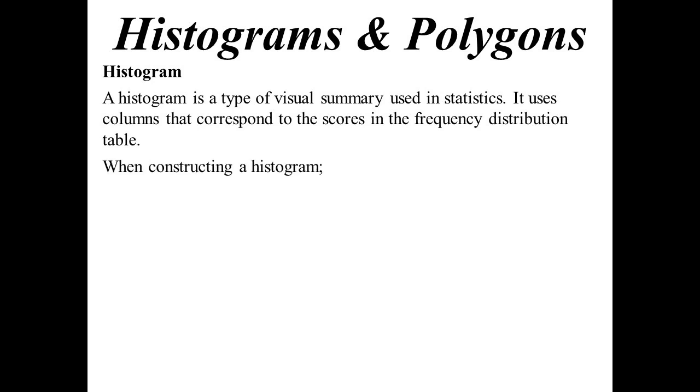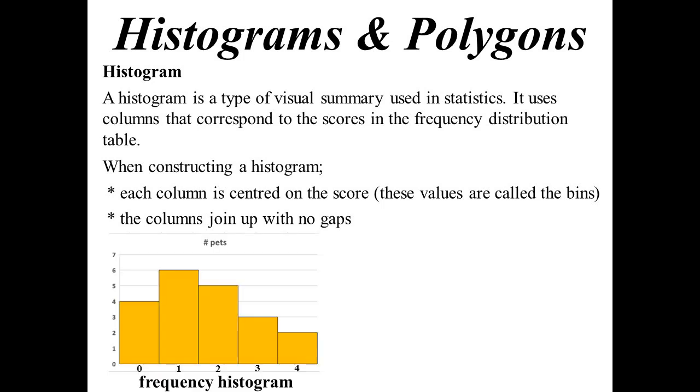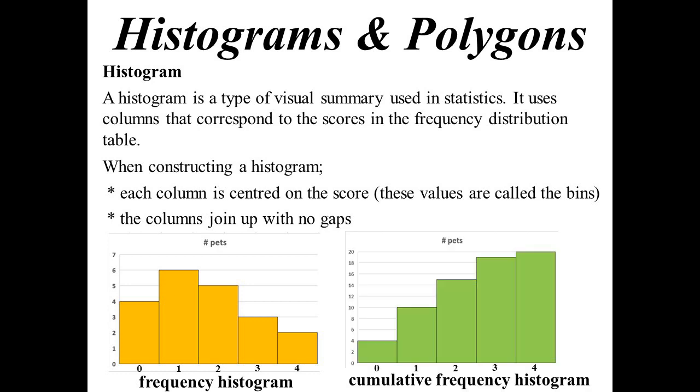So when you construct your histogram, things to keep in mind. Every column is centered on the actual score itself, so the score sits in the middle of the column. Sometimes these values are known as the bins. The columns we join up without a gap. There's a frequency histogram of our pet example that we did. A cumulative frequency one, then you would add the frequencies as you go along, so you should see it rising. Those columns will rise as you go up.